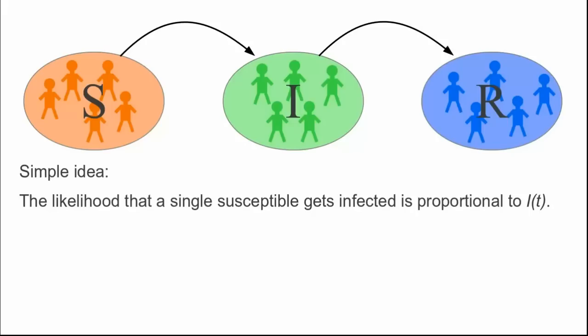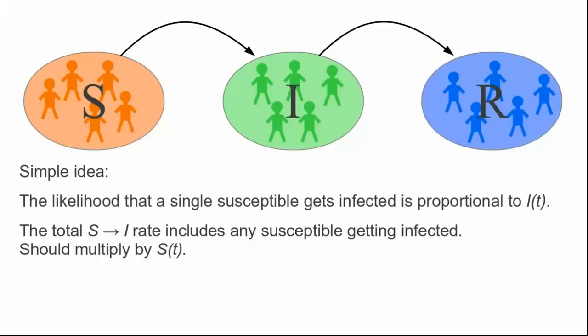Now you presumably aren't the only susceptible person in the population. We assume all susceptible individuals are similar, and we imagine the likelihood of any susceptible getting infected is proportional to the number of infectives I. To determine the total rate of susceptibles becoming infected, we have to add up all the possibilities of susceptibles getting infected, i.e., we have to multiply by the number of susceptibles S of t. Since we multiplied by S of t to get the S to I rate, this infection rate is proportional to S as well as proportional to I of t.